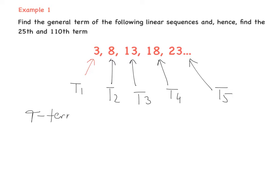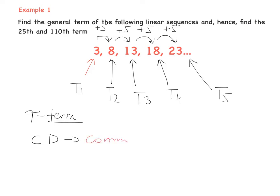T stands for term, as you know. Now, in a linear sequence we have the same difference — the common difference. So what's the difference? Between 3 and 8, that's between the first and second term, it's plus 5. From 8 to 13, plus 5. 13 to 18, plus 5, plus 5. So the key thing is the common difference — we use the shortcut CD. And in this case, it's plus 5.